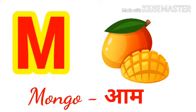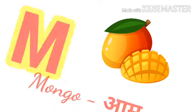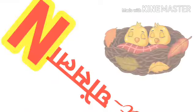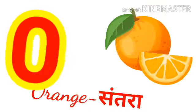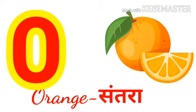mango means aam. N for nest, nest means gosla. O for orange, orange means santura. P for parrot,